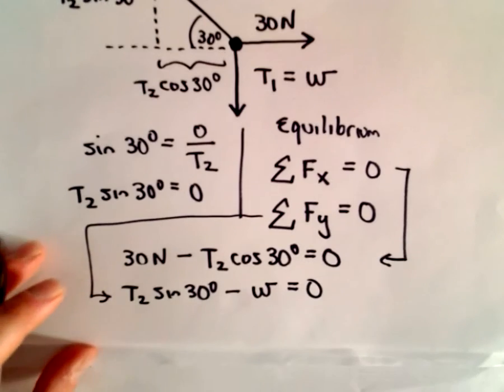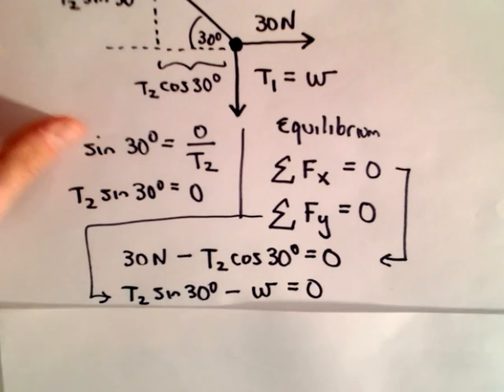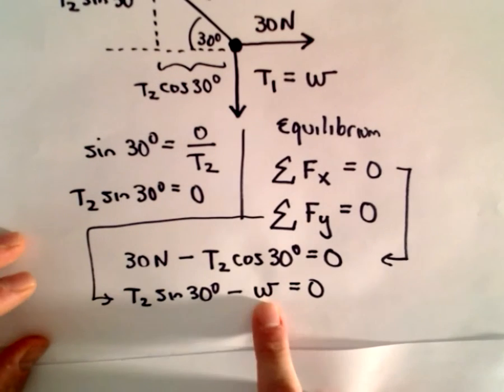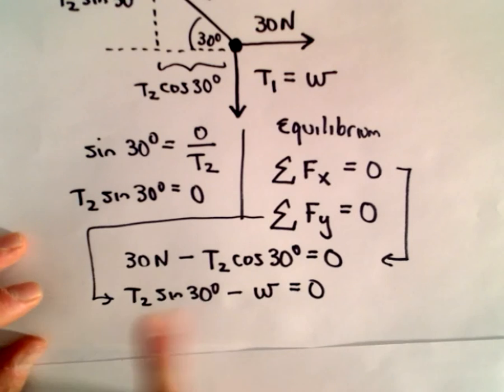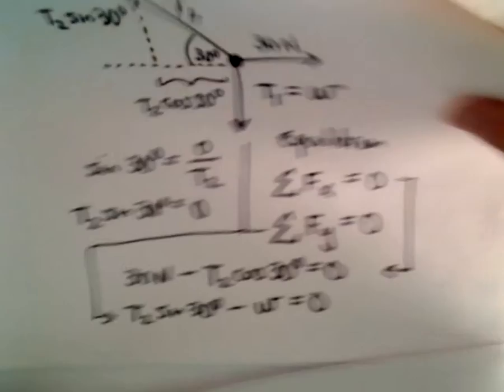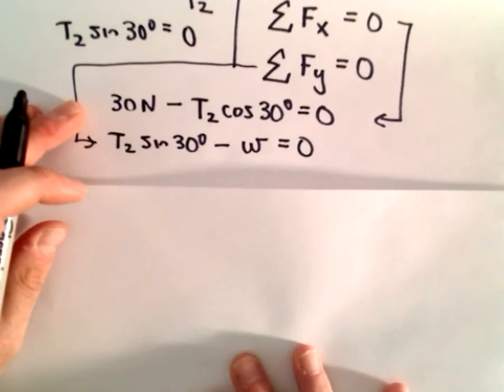So, in this case, all we have to do now is just solve. So, I'm going to solve, again, we're trying to eventually solve for W. Well, I could solve for W if I knew T2. Well, I can figure out T2 from my first equation. So, that's going to be our line of attack here.